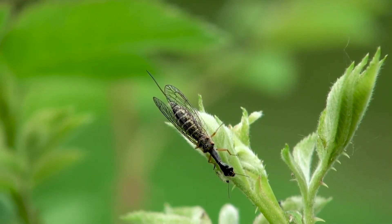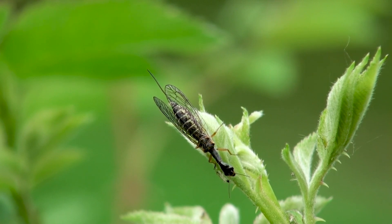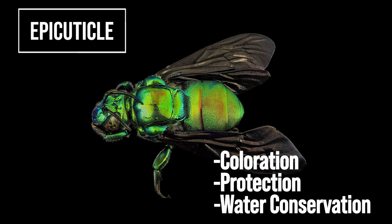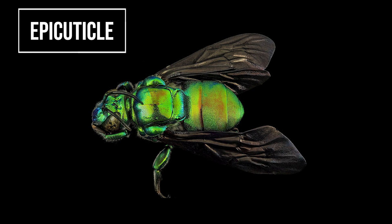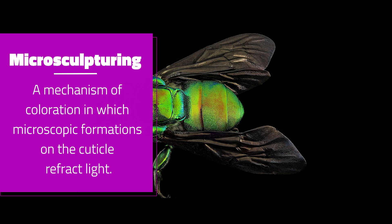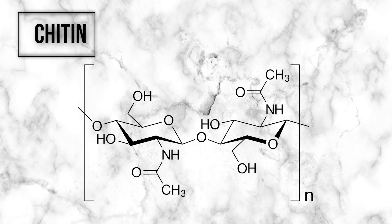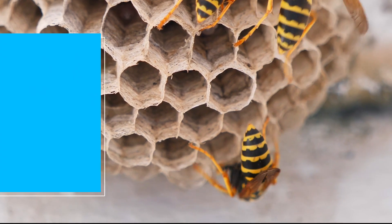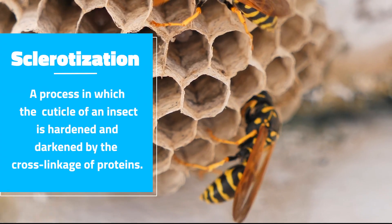The cuticle is the outermost region of the integument. It has different layers, each with specific functions, and is made of non-living material. The three layers of the cuticle are the epicuticle, the exocuticle, and the endocuticle. The epicuticle is a rigid outer layer whose primary purposes are coloration, protection, and water conservation. It contains a layer of wax that keeps water both in and out of the insect's body cavity, and coloration is provided through microsculpturing, where microscopic formations reflect light. The exocuticle and endocuticle contain chitin, an incredibly durable protein. The strength of the exoskeleton results from the arrangement of chitin within it, with minuscule rods called microfibrils in a helicoid arrangement. The exocuticle contains chitin proteins that have been cross-linked in a process known as sclerotization. It cannot be digested, so it is shed in each molting, and it can also provide coloration through pigmentation.